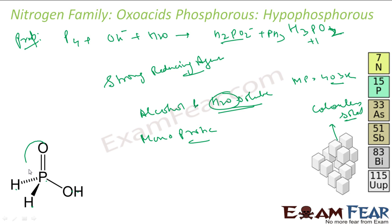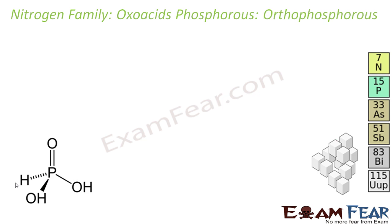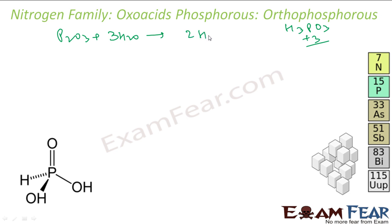The next one is orthophosphorus acid, with formula H3PO3. Here the oxidation state of phosphorus is +3. It is also called phosphonic acid. To prepare it, you react P2O3 with water to form H3PO3. It is dibasic — there are two OH groups, whereas the earlier one was monobasic with only one OH.